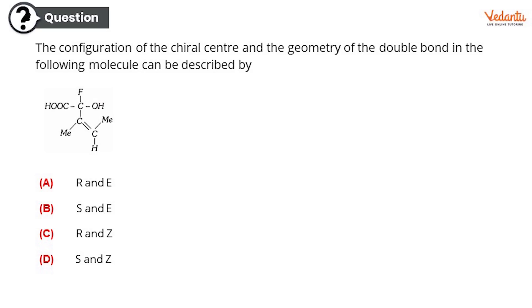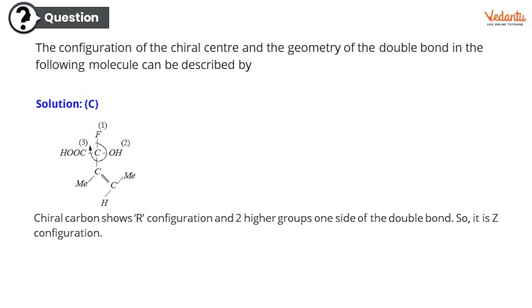Next question. The configuration of the chiral center and the geometry of the double bond in the following molecule can be described by this molecule. This molecule can be decided by the chiral center. First option R and E. Second option S and E. Third option R and Z. And fourth option S and Z. So the correct response is C, R and Z. And this explanation is this. I guess you all would be able to recognize this and understand this by this time.